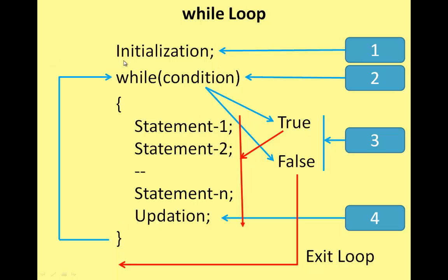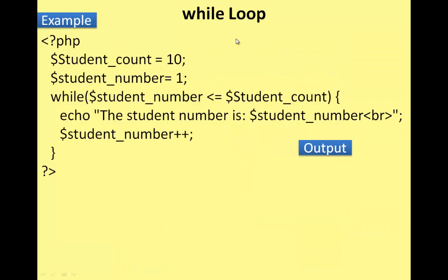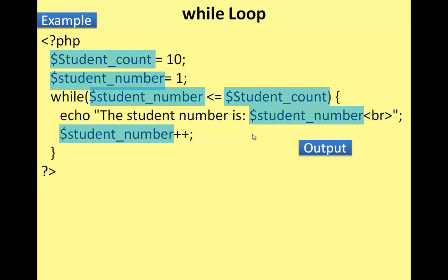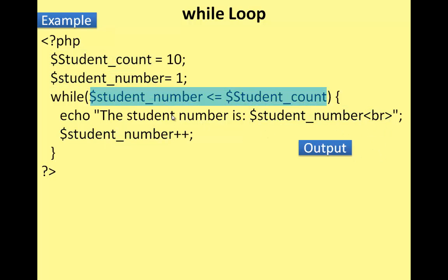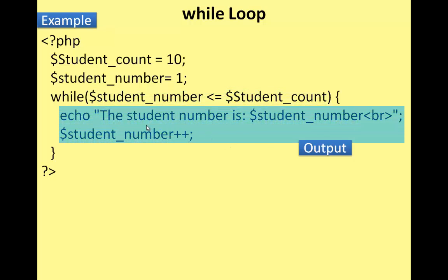After while, suppose the condition is false — the loop is valid and exits. Here is another while loop example using PHP code. This is HTML code with variable names declared. This is the condition, and this is the loop body.